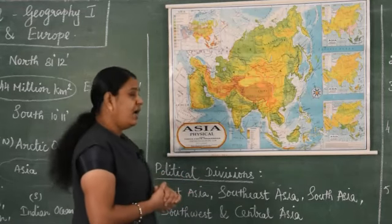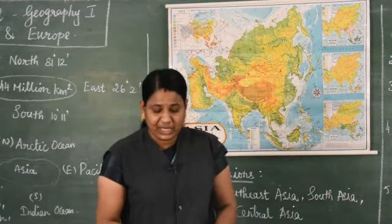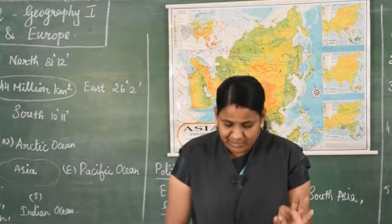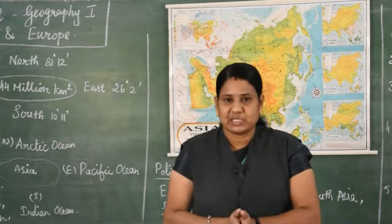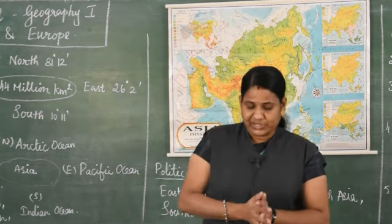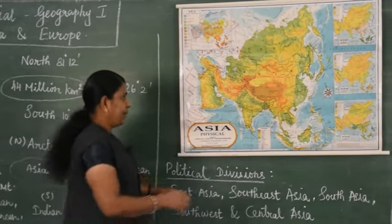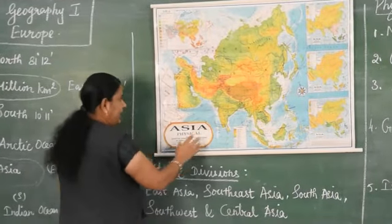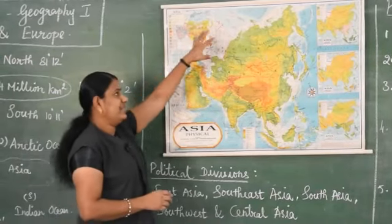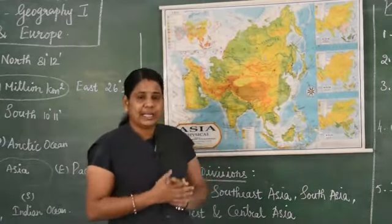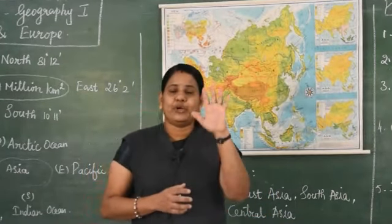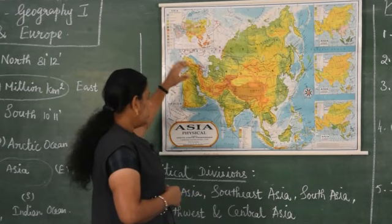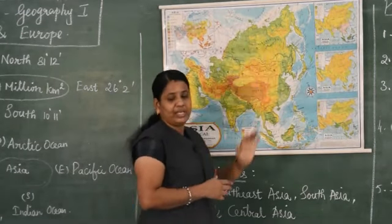If we see the political divisions, how it is divided. Asia was divided into many divisions. Based on the landship and political status, they are divided into East Asia, South East Asia, South Asia, South West Asia and Central Asia. Based on the landship and the political status, it was divided into five.